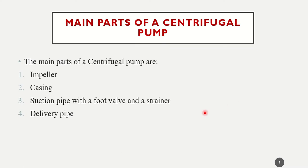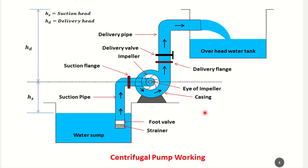Coming to the parts of a centrifugal pump, there are four important components. First is the impeller — the rotating part of the pump. The rotating part of a turbine is called a runner, while the rotating part of a centrifugal pump is called an impeller. This impeller has vanes or buckets fitted inside. Next is the casing — a protective cover all around the impeller. Then you have a suction pipe with a foot valve and strainer, and a delivery pipe.